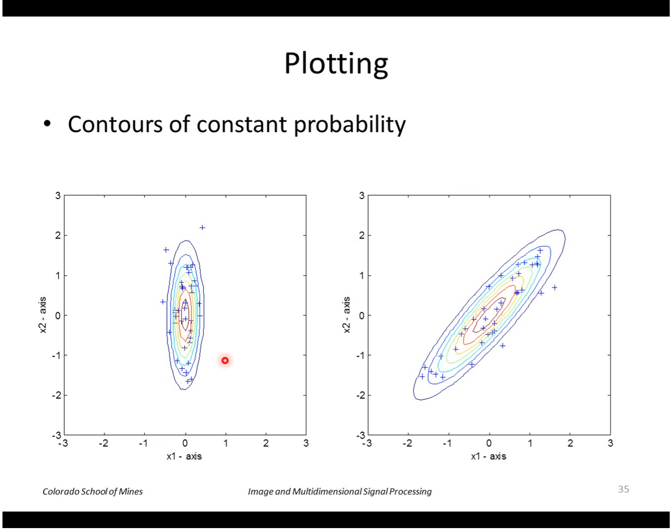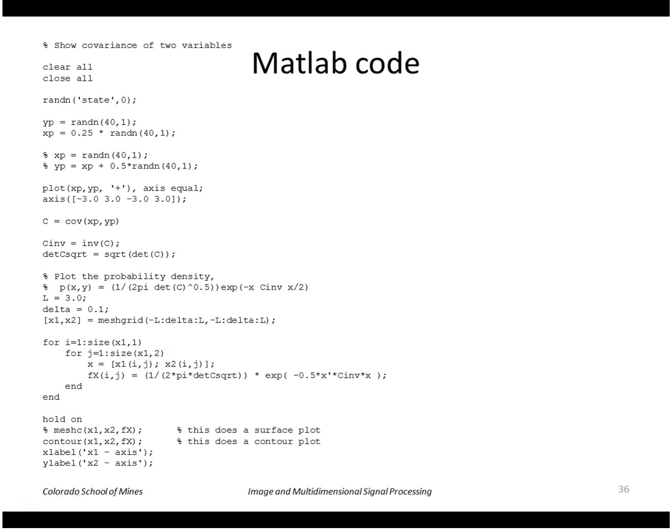Here's some contours of constant probability for those two cases. This is some MATLAB code that displays that. Here I call the COV function to find the covariance.